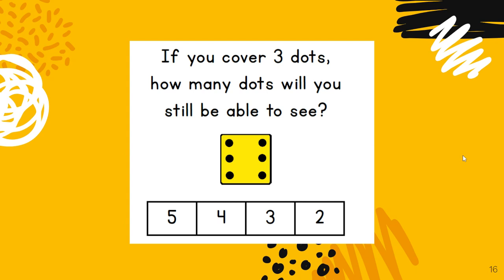Let's look at this one. If you cover up 3 dots, how many dots will you be able to see? So, cover up 3 or take away 3, how many dots would be left? 3. 6 minus 3 equals 3.